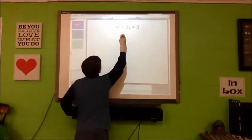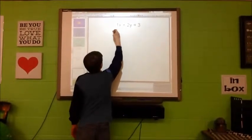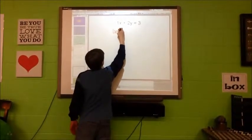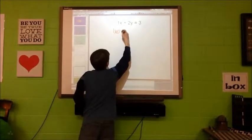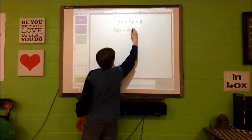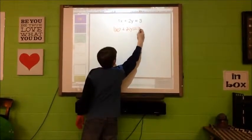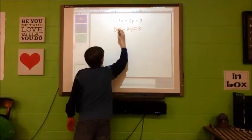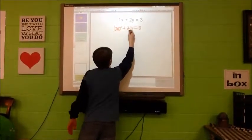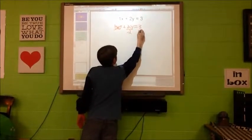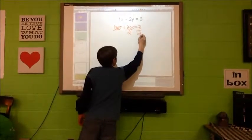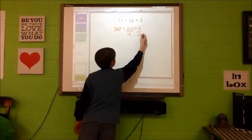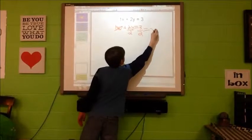To solve this problem, you need to solve for Y. So 1 times 0 plus 2Y equals 3. This cancels out. This is your 2Y. If I divide by 2 equals 3, so 3 over 2. And that equals Y.